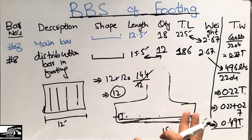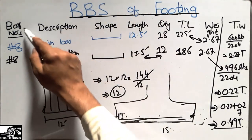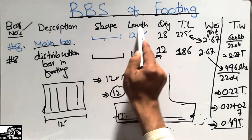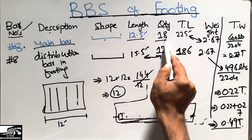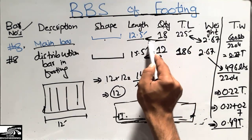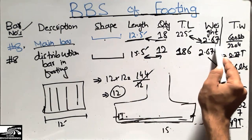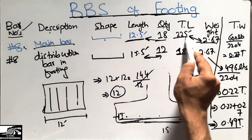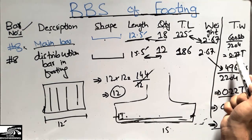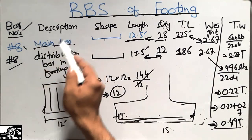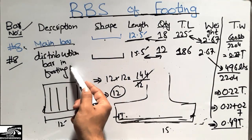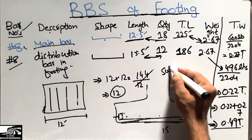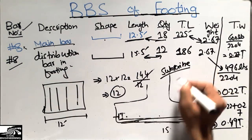So these were the steps in the bar bending schedule of the footing. We need to know: the bar number, the description, the shape, the length of the bar, the quantity, then the total length found by multiplying quantity by the length of one bar, the unit weight of the bar, and the total weight found by multiplying unit weight by total length. Divide by 2,204 to convert to tons. This was all about the BBS of the footing. Subscribe to our channel for more civil engineering updates. Thank you for watching and please share the video.